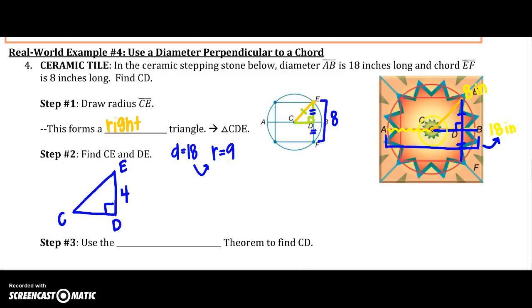So any radius C, E, C, F, C, B is going to be 9. So I have 9 here. So because I know how to solve a right triangle, I can use the Pythagorean Theorem. So I'm going to say 9 squared equals 4 squared plus CD squared.